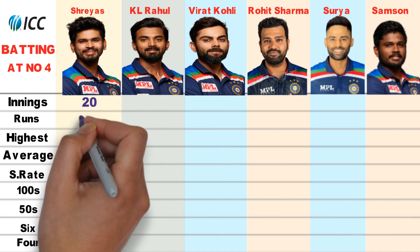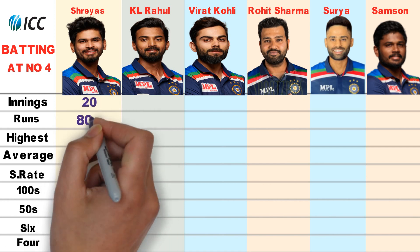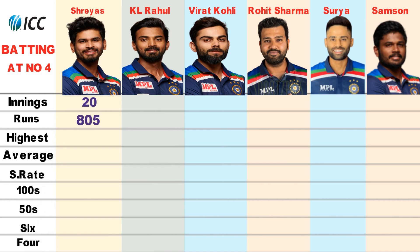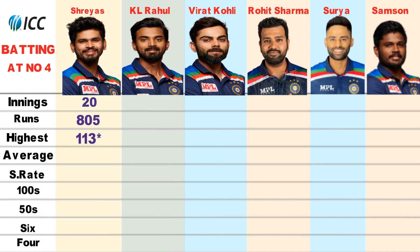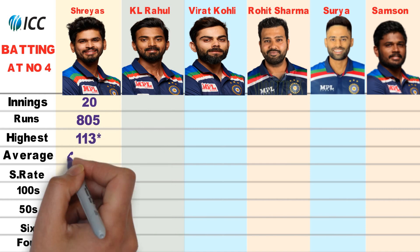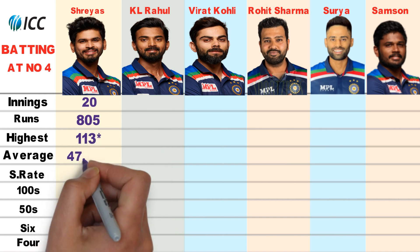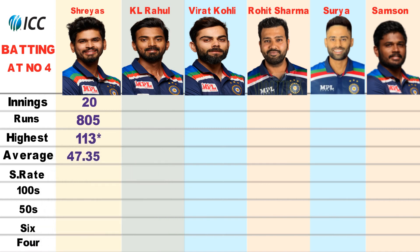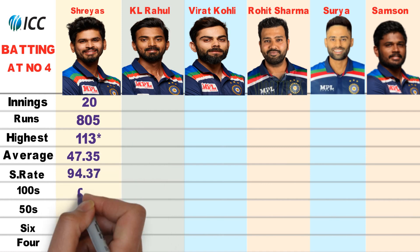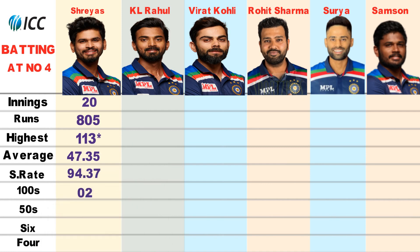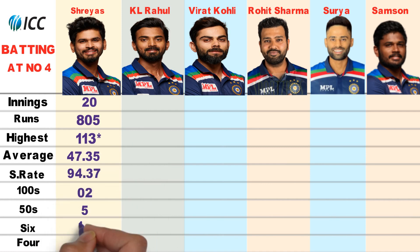Shreya Iyer played 20 innings, scoring 805 runs with a highest score of 113 not out. Batting average 47.35, strike rate 94.37. He scored 2 centuries and 5 half centuries, with 12 sixes and 94 fours.